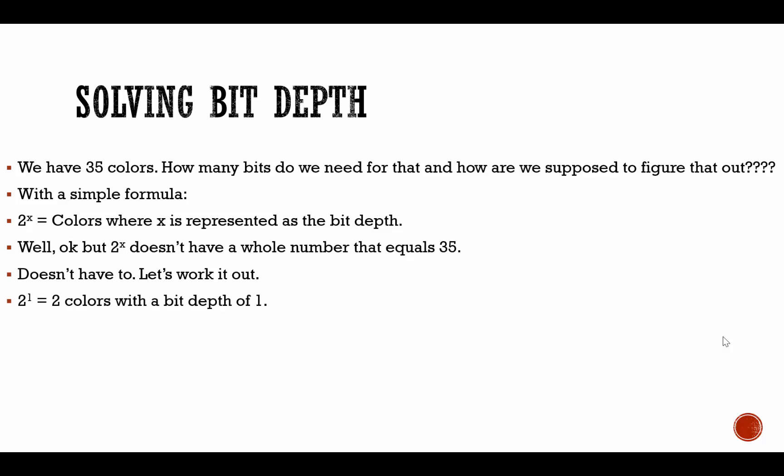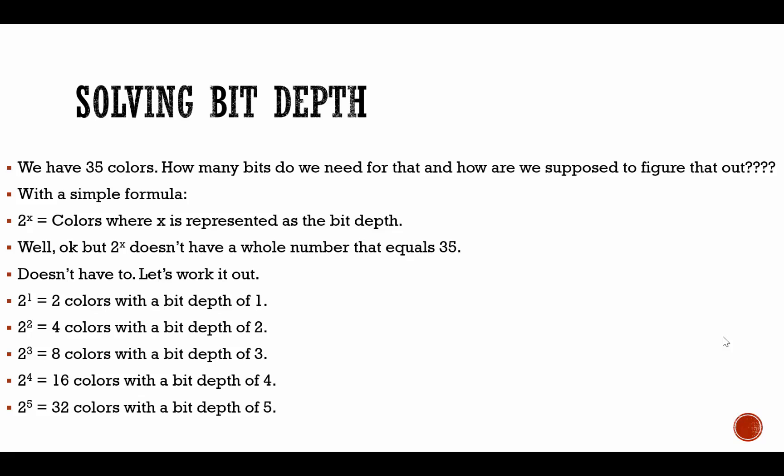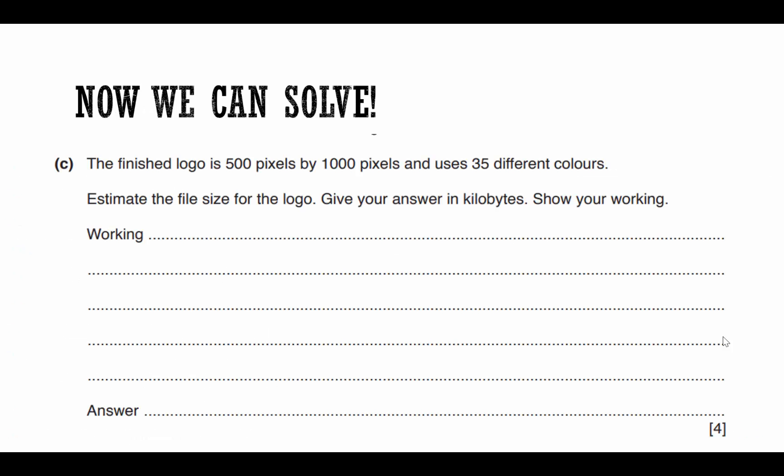Let's work it out. 2 to the power of 1 gives me 2 colors with a bit depth of 1. 2 to the power of 2 gives me 4 colors with a bit depth of 2. I keep going. 2 to the power of 3 gives me 8 colors with a bit depth of 3. 2 with a bit depth of 4 gives me 16 colors. That's not enough for 35 colors. A bit depth of 5 gives me 32 colors. That is not 35 colors. So I simply keep going to the next one. A bit depth of 6 will give me 64 colors, which is enough. So each pixel can have at least 35 colors.